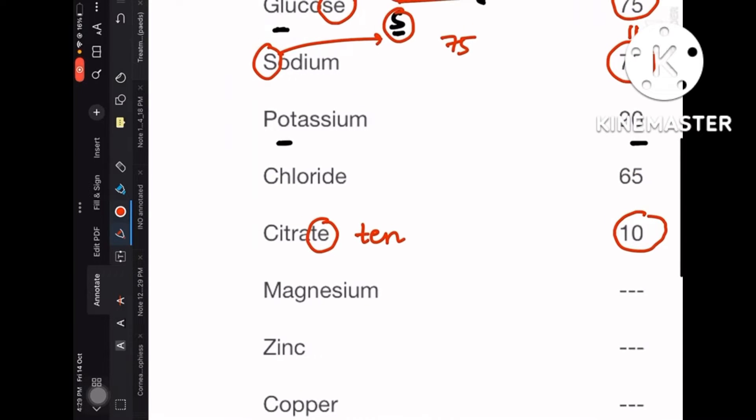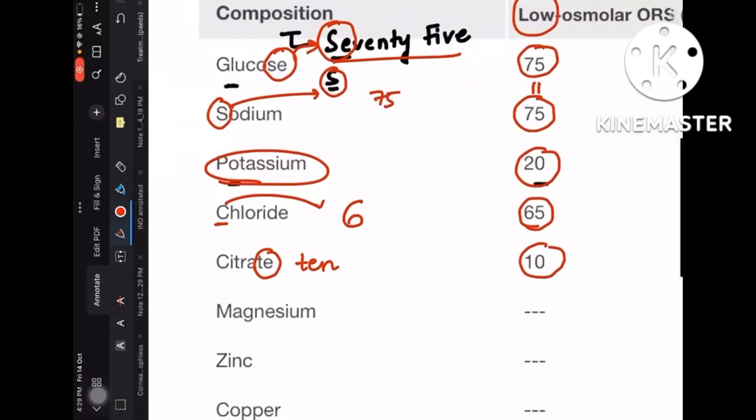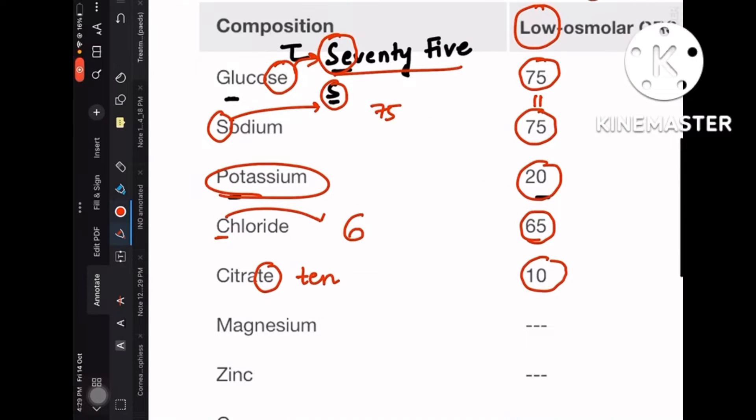Coming to potassium, potassium is 20. And chloride, C is again for 6 right, so 65—at least the first digits you can remember from this mnemonic. Citrate, the last letter is 'te,' so 10. So glucose 'se' is 75, sodium S is 75, citrate 'te' is 10, chloride C is 65, and potassium is 20.